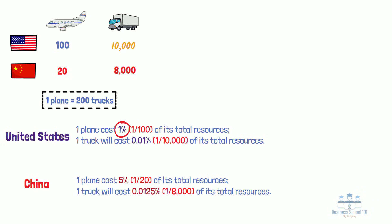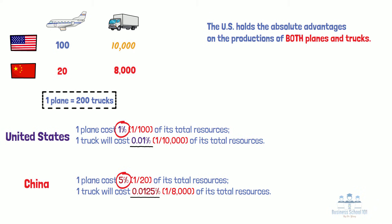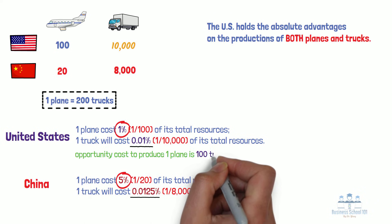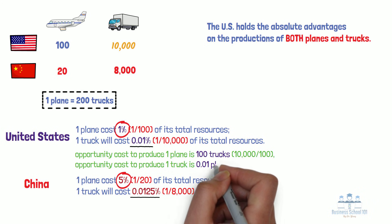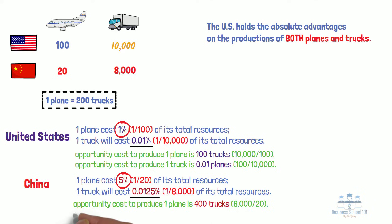In this scenario, the U.S. spends less resources on both plane and truck production than China — in other words, the U.S. holds the absolute advantage in the production of both planes and trucks. So how can the U.S. still benefit from trading with China? To answer this question, we need to calculate the opportunity cost for each country. Because the U.S. can produce either 100 planes or 10,000 trucks, the opportunity cost for the U.S. to produce one plane is 100 trucks, and the opportunity cost to produce one truck is 0.01 planes. Similarly, because China can produce either 20 planes or 8,000 trucks, the opportunity cost for China to produce one plane is 400 trucks, and the opportunity cost to produce one truck is 0.0025 planes.